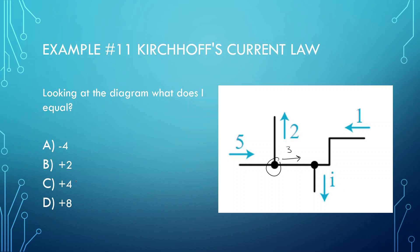So we have positive 4. Negative 4 would mean it would be the opposite direction of the arrows, but we want it to go in this direction of the arrow, so that's positive 4.